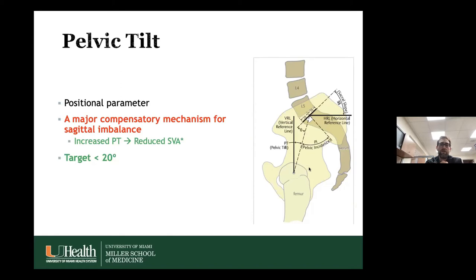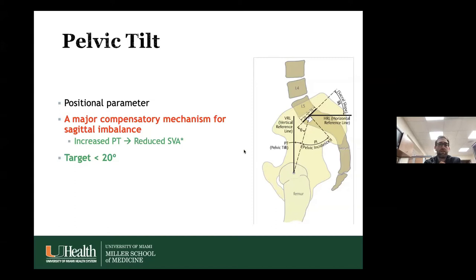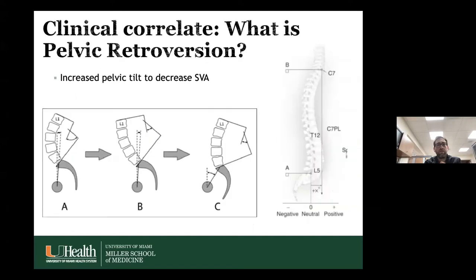SVA is a plumb line dropped from the center of the C7 vertebra, and it's the distance from the posterior superior point of the S1 end plate to that line. If you rotate the pelvis and sacrum posteriorly — pelvic retroversion — that brings the spine posterior, reducing the SVA and keeping the center of gravity over the feet. The target for SVA has been shown to be less than 20.